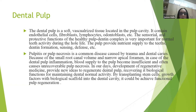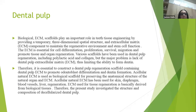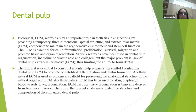By transplanting stem cells, growth factors, or biological scaffold into a dental cavity, functional pulp regeneration should be achieved. The biological extracellular matrix scaffolds play an important role in teeth tissue engineering by providing a temporary three-dimensional structure and extracellular matrix complex to maintain the regenerative environment and stem cell function. The extracellular matrix is essential for cell differentiation, proliferation, survival, and migration, and promotes tissue and organ regeneration. Various scaffolds have been used in dental pulp regeneration, including polyacrylic acid and collagen, but the major problem is lack of dental pulp extracellular matrix, thus limiting the ability to form dentin.